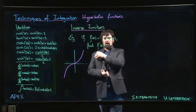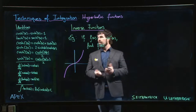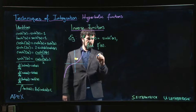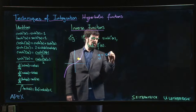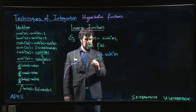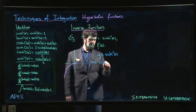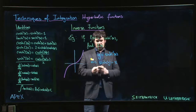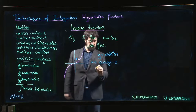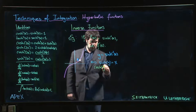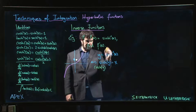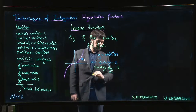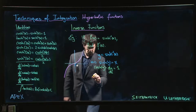One way to proceed is the same way we did for the inverse trig functions. In this case we don't need to worry about domains and ranges. Suppose y equals sinh⁻¹(x). That's the same as saying sinh(y) = x. Taking the derivative of both sides with respect to x, we get cosh(y) times dy/dx on the left and 1 on the right.